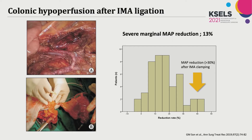In a previous study, we measured marginal artery pressure after IMA clamping. In more than 10% of rectosigmoid cancer patients, marginal artery pressure was significantly decreased by more than 30%. Subclinical hypoperfusion is a real-world concern in some patients, and we need to identify this 10% of high-risk patients with ischemic change to prevent hypoperfusion-related anastomotic complications.